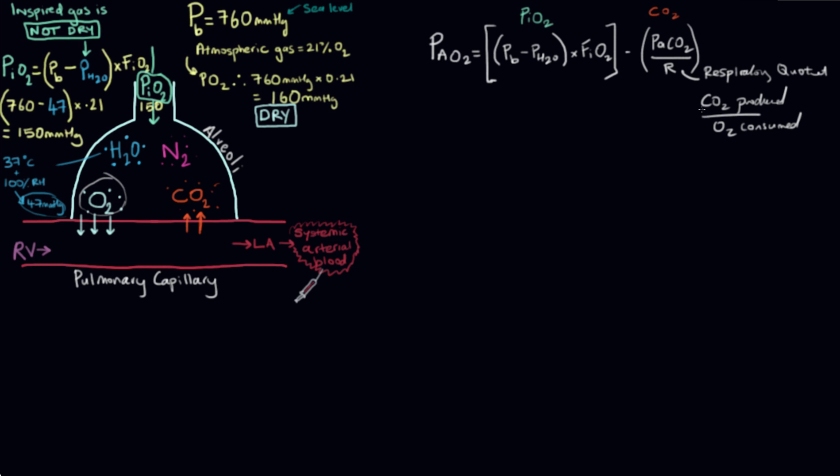Under normal circumstances, this is about 200 over 250, and that's mils per minute, which leaves us with an R of 0.8. So what we're doing is we're going to take the arterial partial pressure of carbon dioxide, divide it by 0.8, and that's going to allow us to factor in the carbon dioxide that's going to be present in the alveolus.